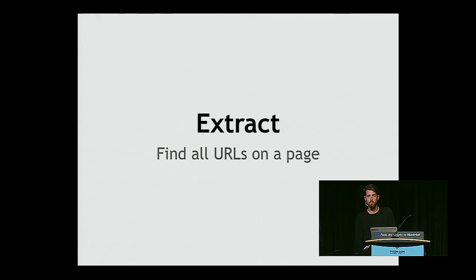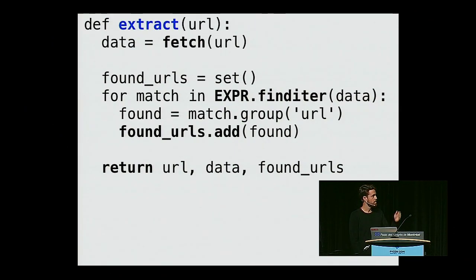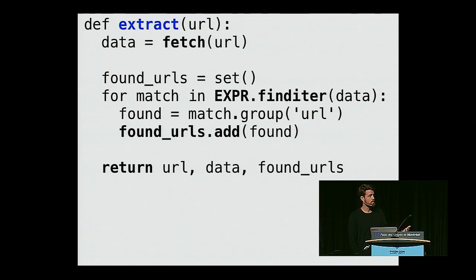Next you need an extract function — find all of the URLs on the page and extract them so you can go scan them later. First step: use that fetch function we just declared to fetch the URL. I'm using a regular expression here — you probably should use Beautiful Soup for actual web scraping, but for this demonstration I'm using a regex. I run the regex on the text I got back, matching something that looks like a URL. Every unique match gets added to a set of found URLs. Then I return the URL I crawled, the data I found, and all the links found in that page.